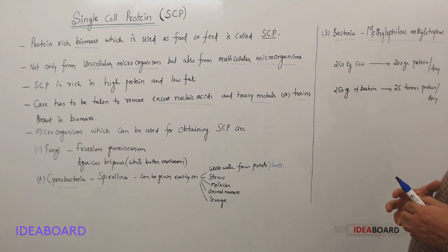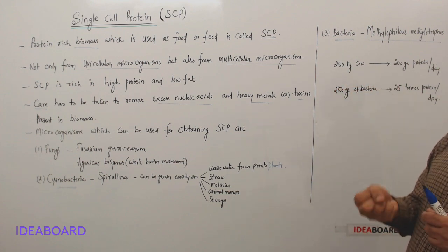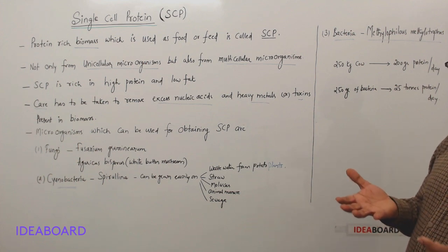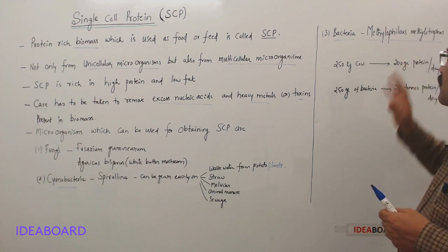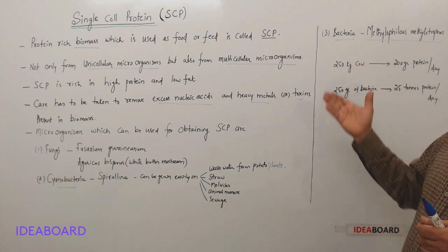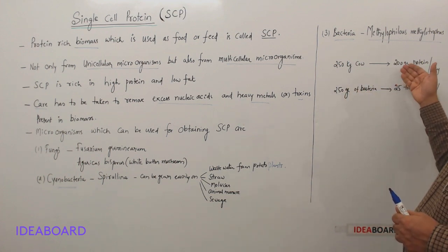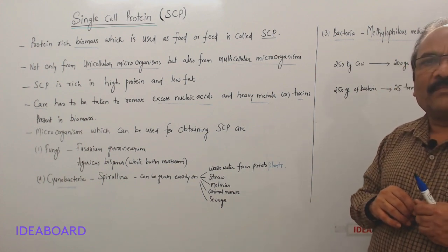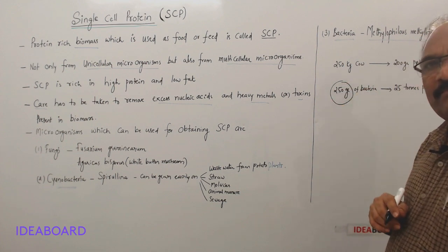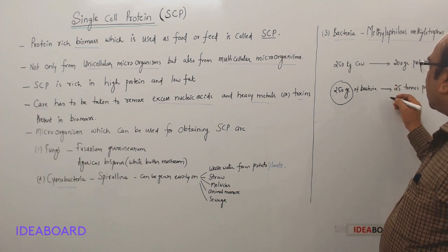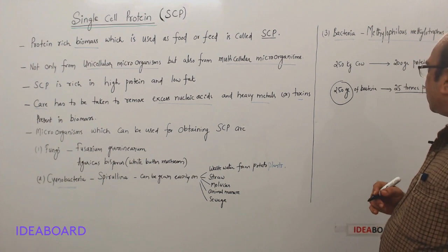Let us compare with a cow which is giving us milk daily. Whatever the amount of milk, let us say 20 liters of milk per day, and in that 20 liters milk you will find how much protein? 200 grams protein. What is the weight of that cow? Around 250 kilograms. So 250 kilogram weighing cow is producing 200 grams of protein per day. Now let us take 250 grams of bacteria, and that 250 grams of bacteria will produce a biomass which contains 25 tons of protein per day.